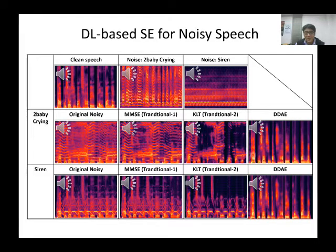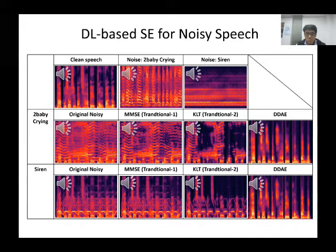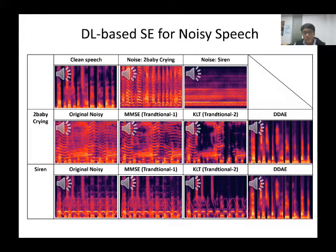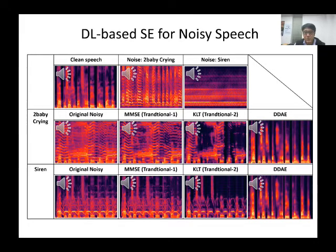From left to right: original noisy, MMSE, KLT, and DDAE. As can be heard, both speech quality and intelligibility of the deep learning-based results are much better than traditional methods. We can also see from the spectrograms that the deep learning-based results show more clear speech structures with less noise components as compared to the two traditional speech enhancement methods.